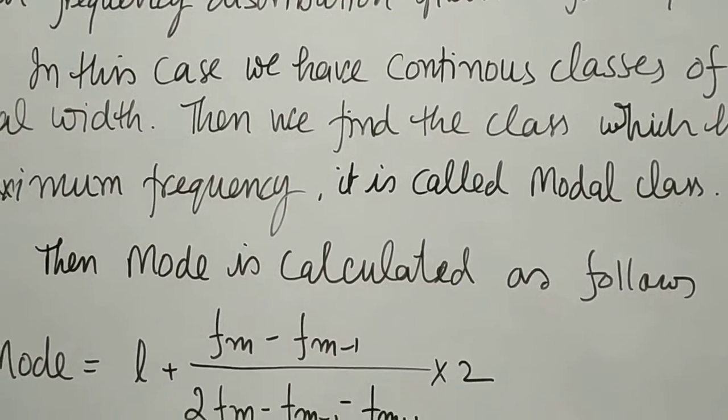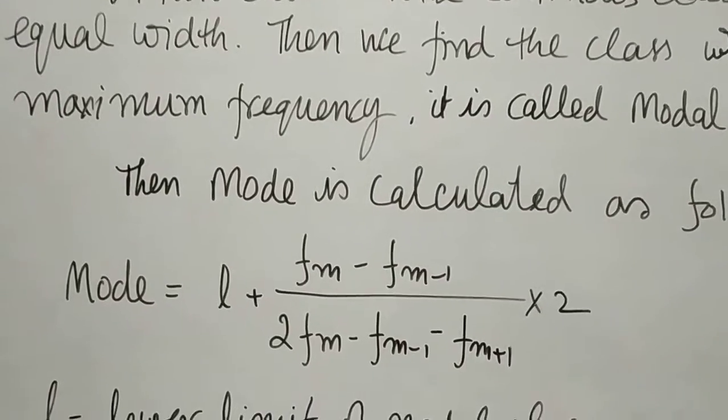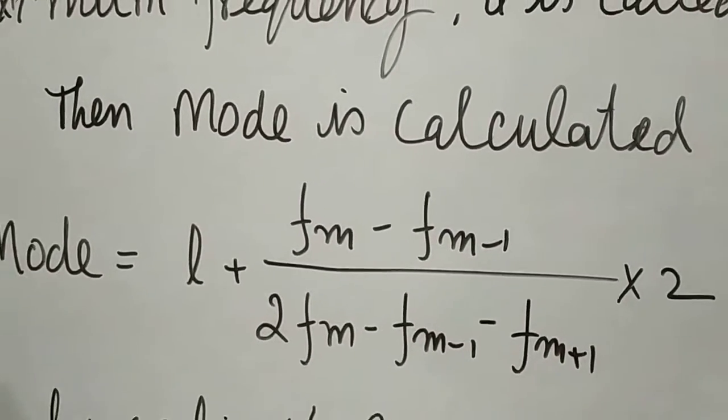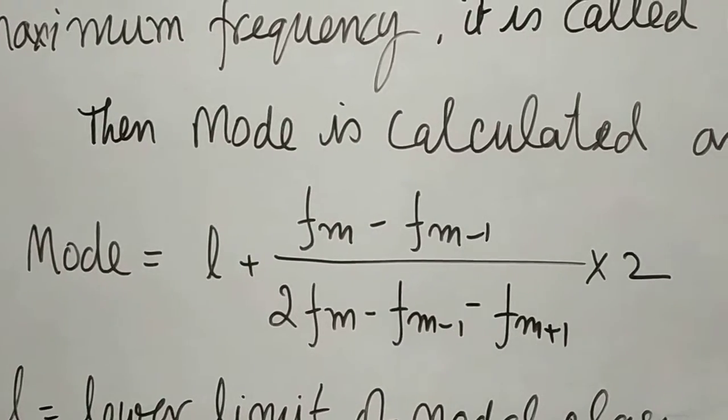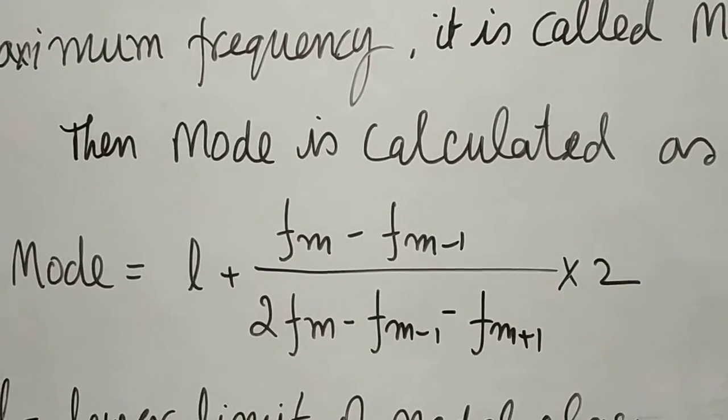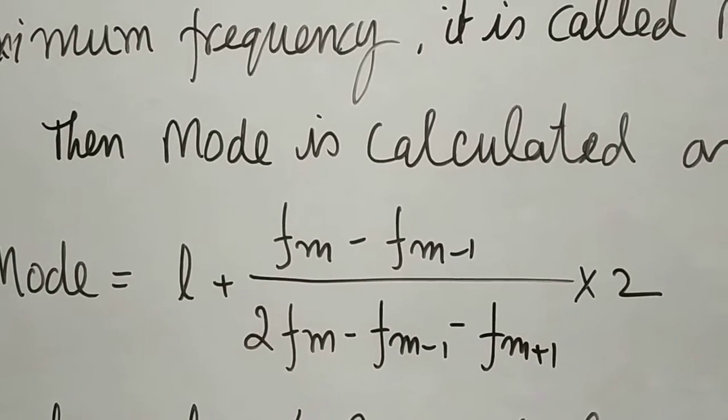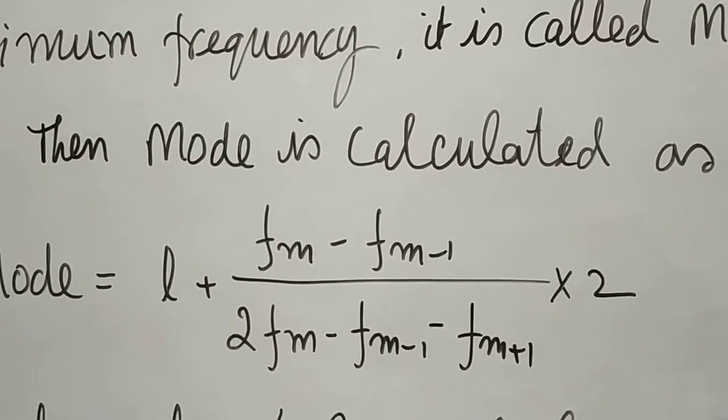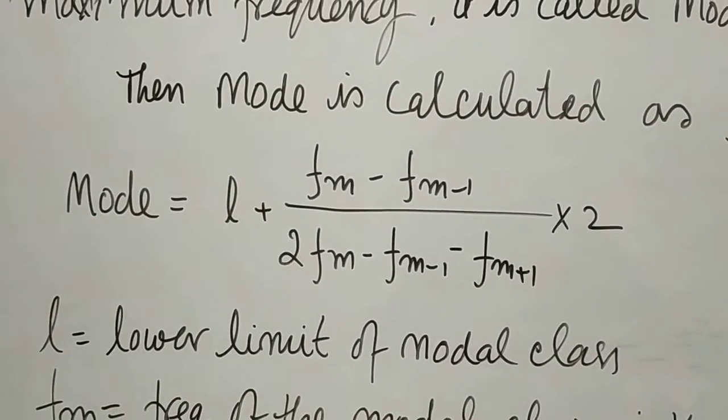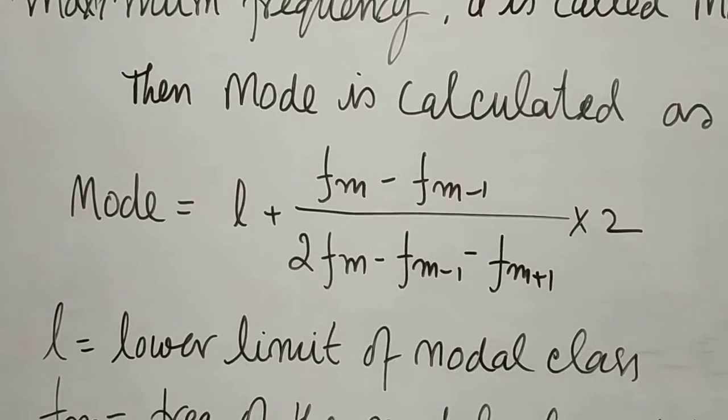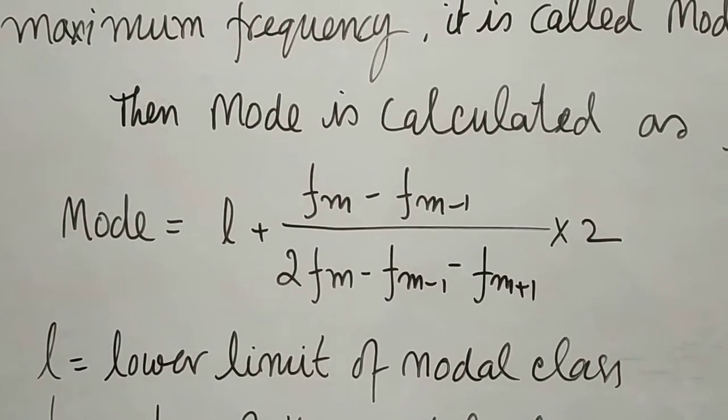Then mode is calculated as follows. This is the formula of mode: Mode = l + (fm - fm-1)/(2fm - fm-1 - fm+1) × 2. What is l? l is the lower limit of the modal class. This l you can remember is same as in case of median.